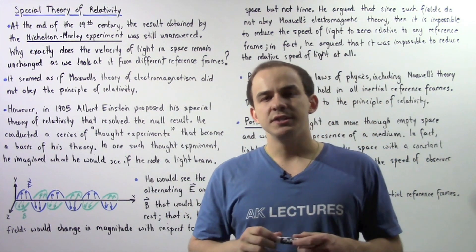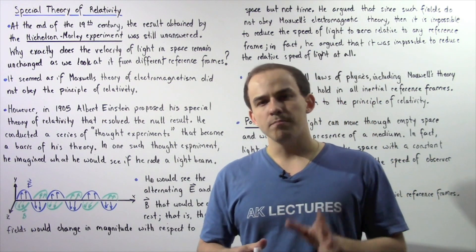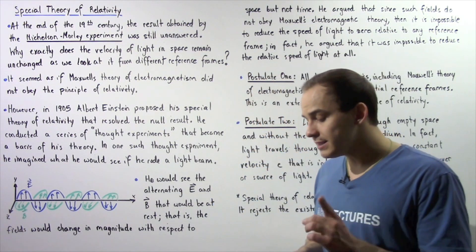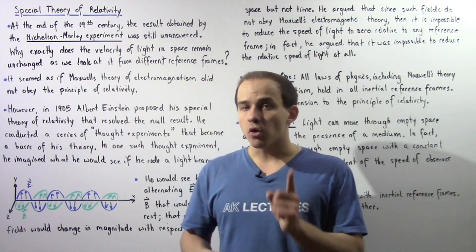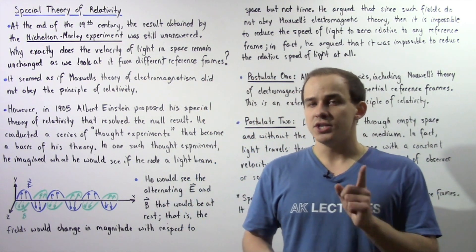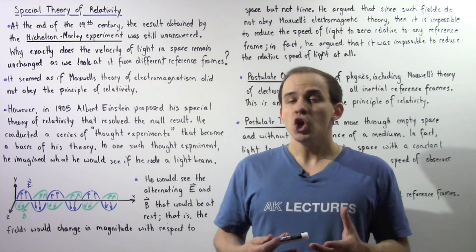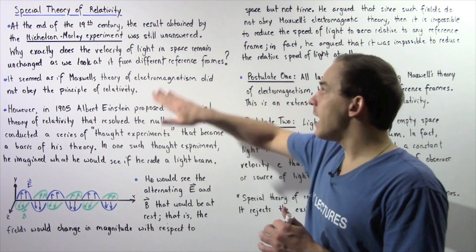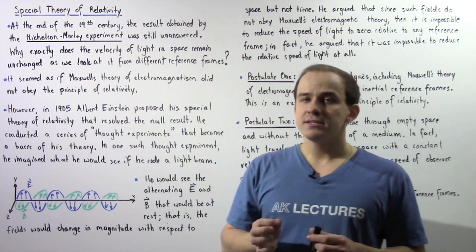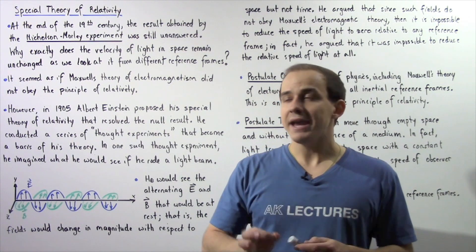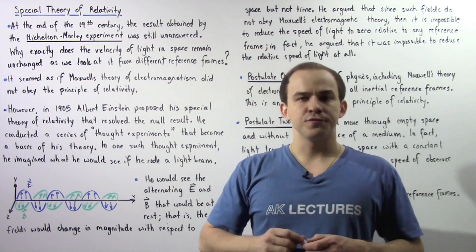At the end of the 19th century, several important questions still remained unanswered. In particular, the result obtained from the Michelson-Morley experiment, known as the null result, remained unanswered. That is, we couldn't answer the following important question: Why exactly does the velocity of light remain unchanged as we look at it from different reference frames?